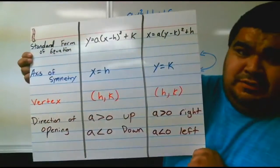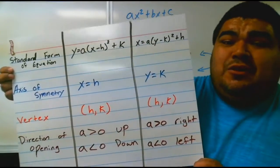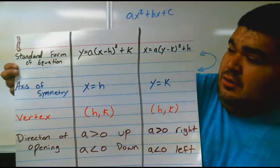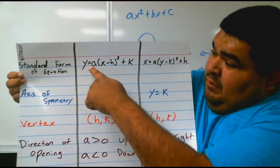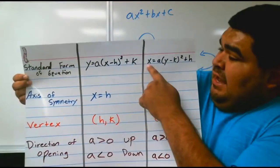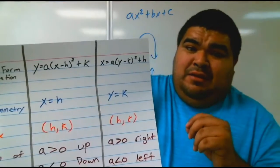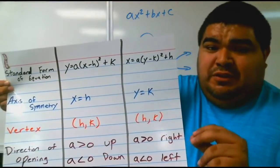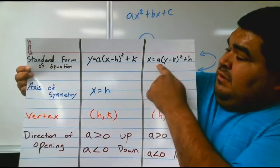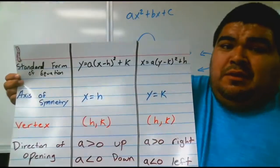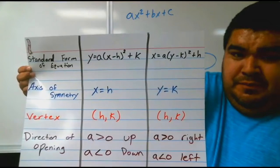Now that you have it on your notes, the first one is the standard form of the equation we're dealing with today, which are parabolas. Notice there are two different equations. One has y equals with x on the inside, and one has x equals with y on the inside. Depending on how your equation starts, you label it accordingly — this column is all for y equals, and this column is all for x equals.